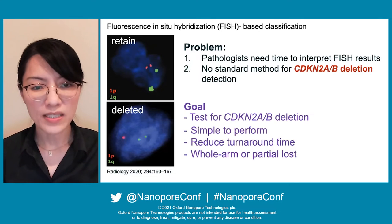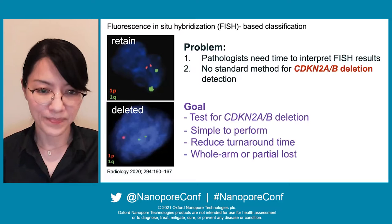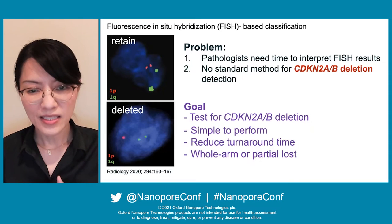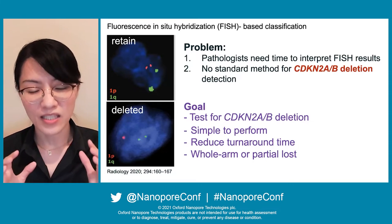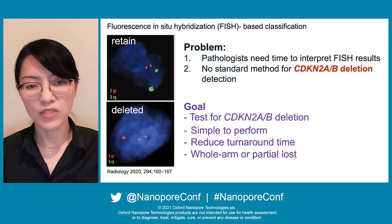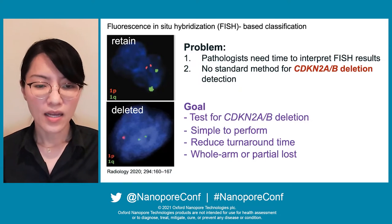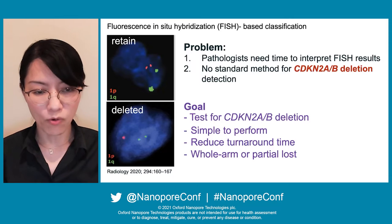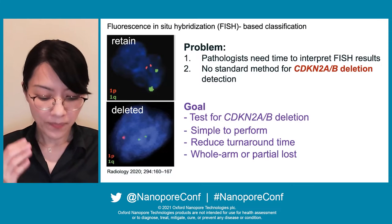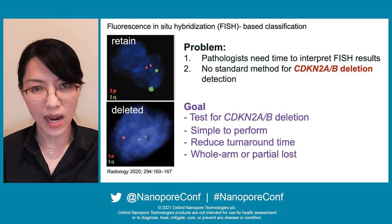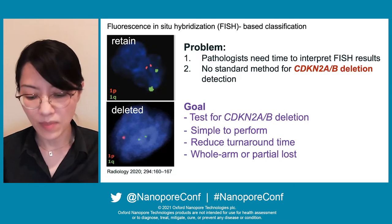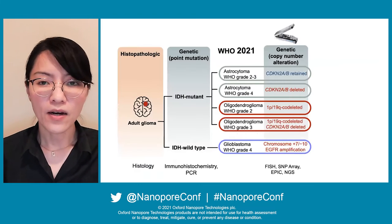So we set our goal to develop a test for CDKN2AB deletion — a test that is simple enough for a technician to perform and quick to get results. Also, if this test provides more information than FISH, for example detecting whole arm deletion or partial loss of a chromosome, this would be ideal.